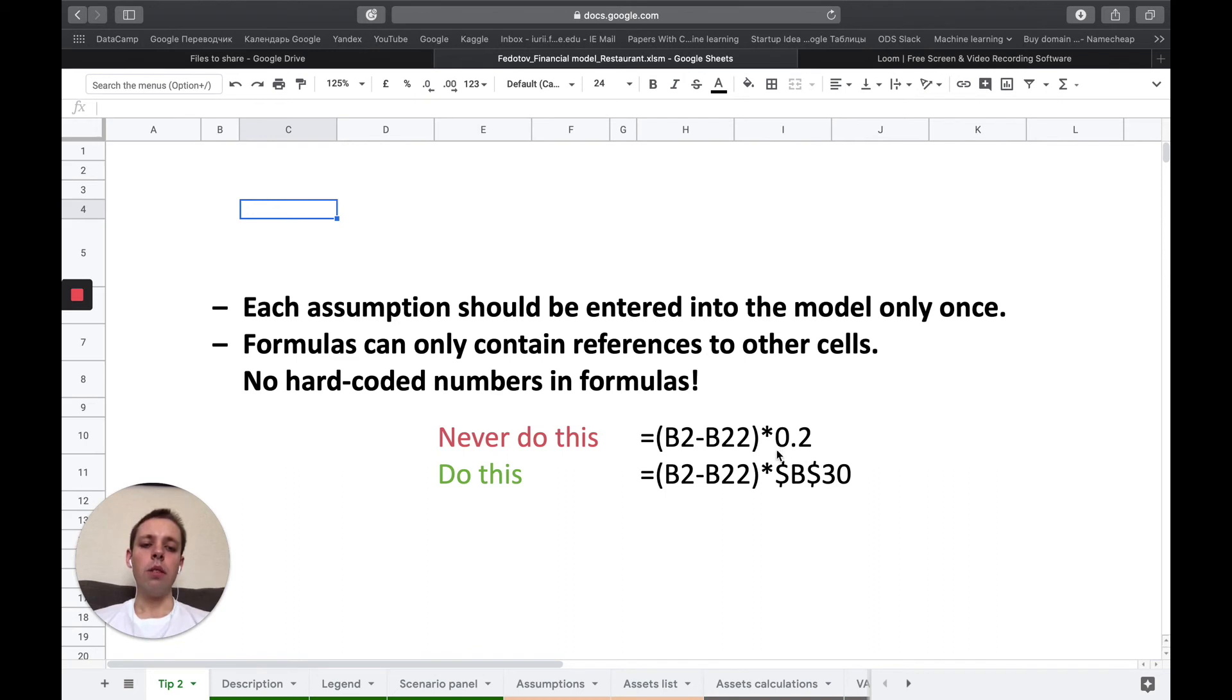If you do this and if you insert values manually, first, you cannot satisfy this rule, which is each assumption should be entered into the model only once. Second, if you come back to the model after a few years, you won't understand what these 0.2 stand for. And if you give your model to another person, they will not understand what these 0.2 stand for as well. It's very important that you never use numbers within formulas directly.